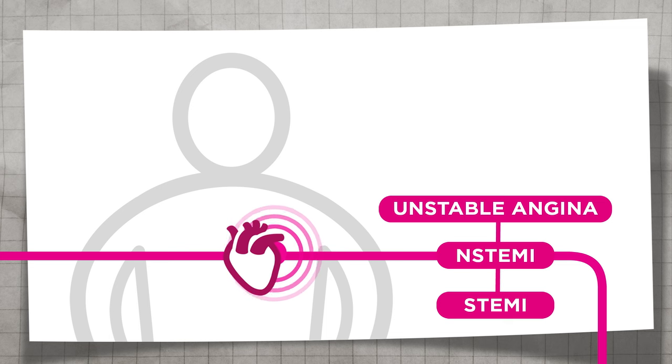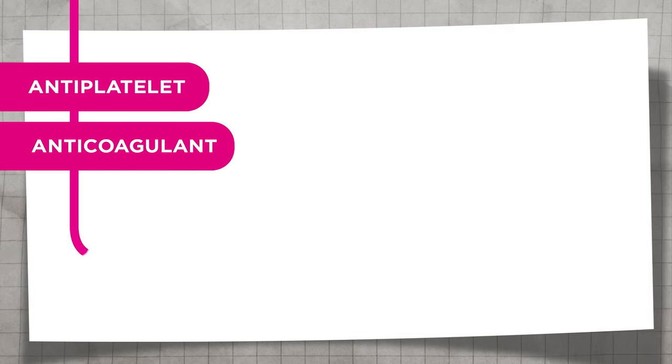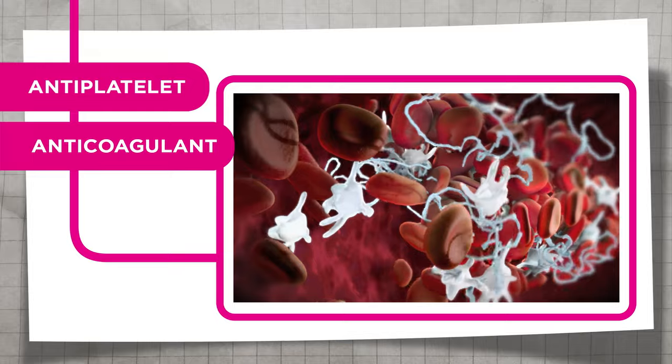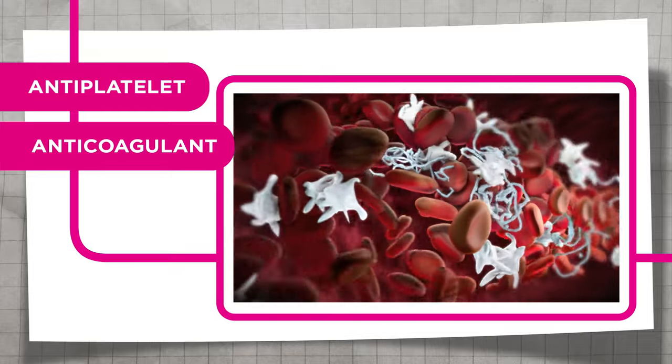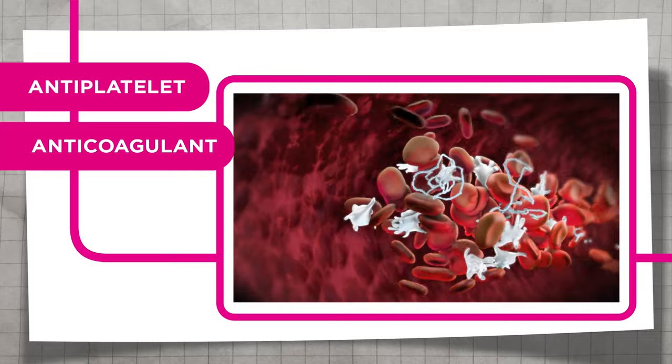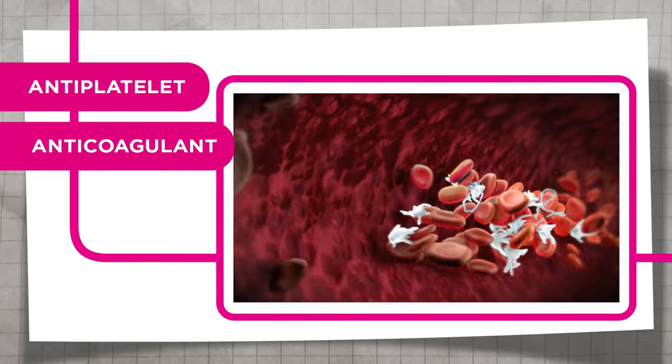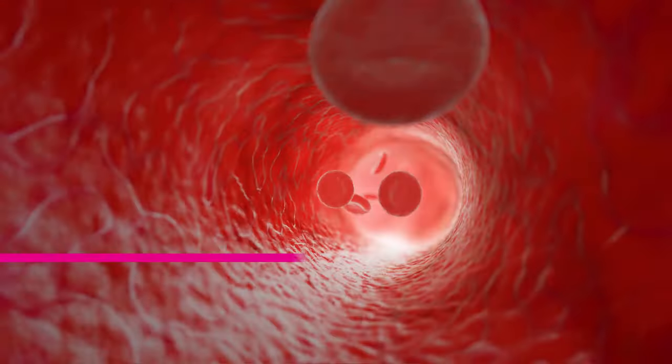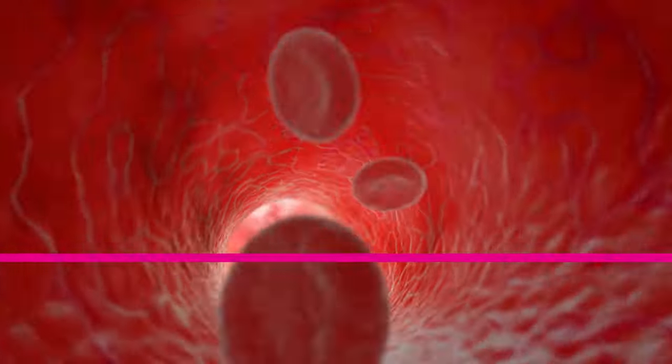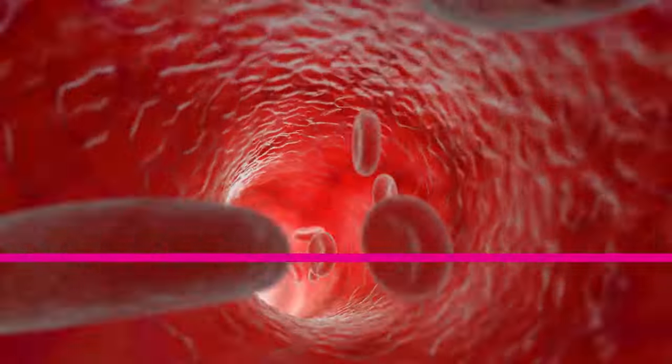Because arterial clots are rich in platelets and stabilised by fibrin, the primary antithrombotic treatment in the acute phase is a combination of antiplatelet and anticoagulant therapy. Guidelines recommend continuing antiplatelet therapy indefinitely to help prevent secondary clots from forming.